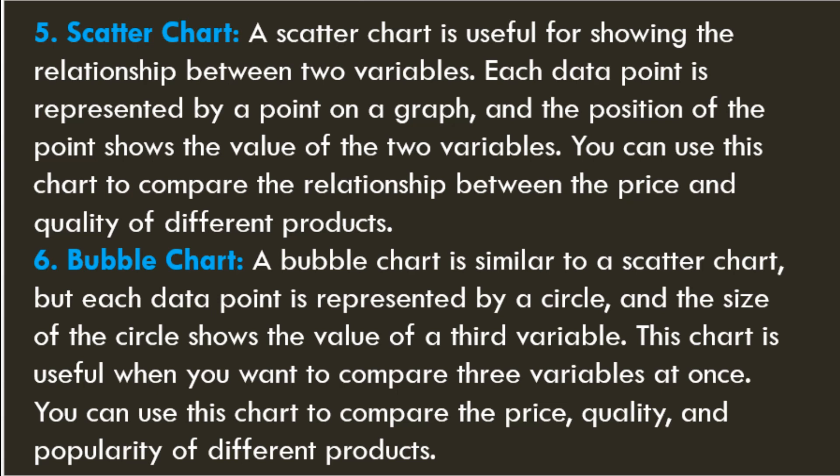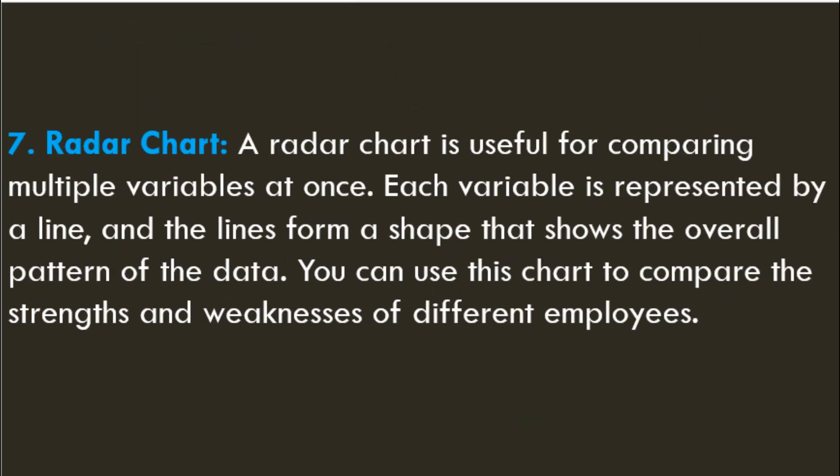6. Bubble Chart — a bubble chart is similar to a scatter chart, but each data point is represented by a circle, and the size of the circle shows the value of a third variable. This chart is useful when you want to compare three variables at once; you can use it to compare the price, quality, and popularity of different products. 7. Radar Chart — useful for comparing multiple variables at once; each variable is represented by a line, and the lines form a shape that shows the overall pattern of the data. You can use this chart to compare the strengths and weaknesses of different employees.